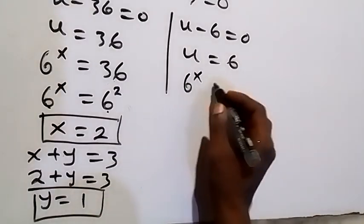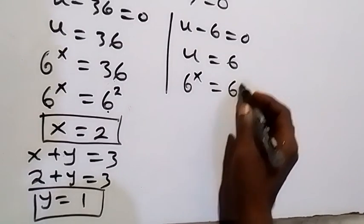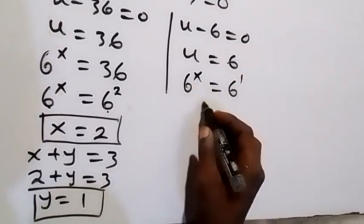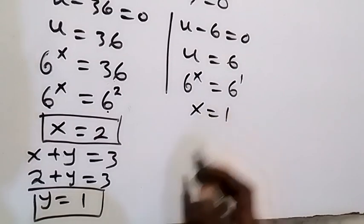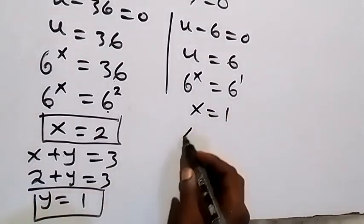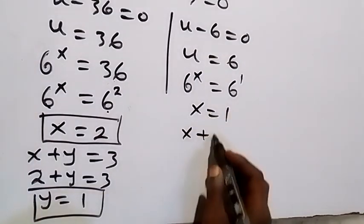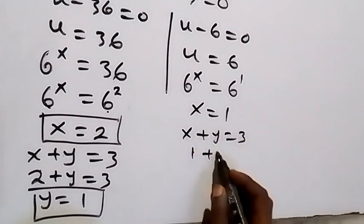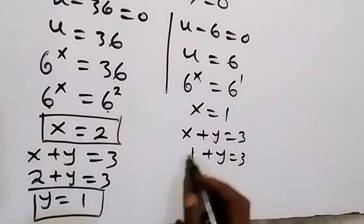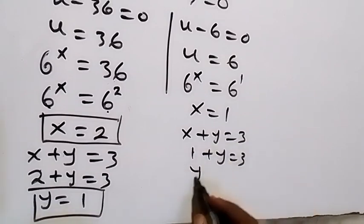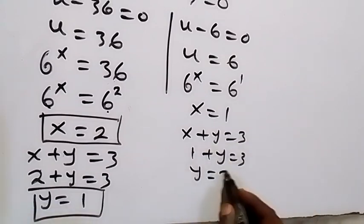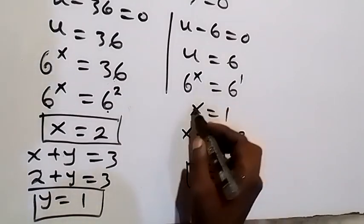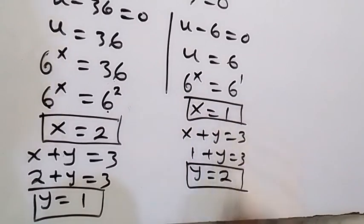For the second case, u equals 6 raised to power x equals 6, which is 6 raised to power 1. Since the bases are equal, x equals 1. Using equation 2: 1 plus y equals 3, so y equals 3 minus 1, which is 2. Therefore x equals 1 and y equals 2.